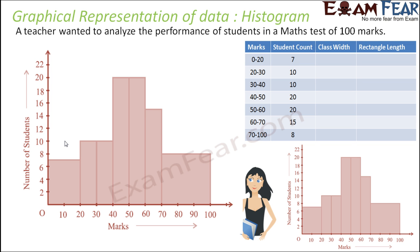Let's take one more example to understand the concept well. A teacher wants to analyze the performance of top 100 students in a maths test. She has created these classes: 0 to 20 with 7 students, 20 to 30 with 10 students, 30 to 40 with 10 students, 40 to 50 with 20 students, 50 to 60 with 20 students, 60 to 70 with 15 students, and 70 to 100 with 8 students. Please note that the class size is not the same.